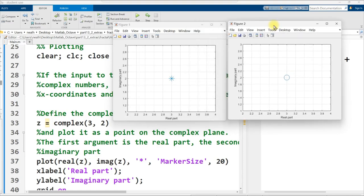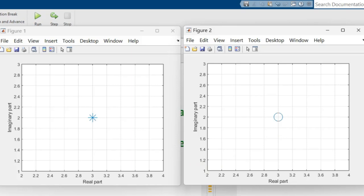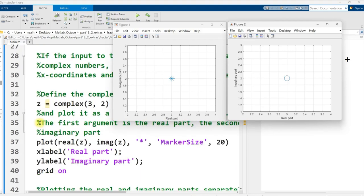All right, two figures popped up here. And if you look carefully at these figures and compare them, you will notice that they are practically identical, except one of them is indicating a point with a star and the other is indicating a point with a circle. In the first figure, I created a complex number, 3 plus 2i.